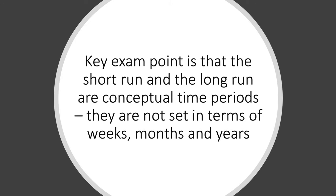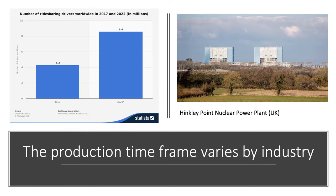The key exam point is that the short run and the long run are just conceptual, theoretical time periods. They're not set in terms of weeks, months and years — the short run and the long run will vary by industry because the production timeframe varies by sector. Essentially, the long run is the period of time needed for a supplier or producer to have flexibility over all of the relevant production decisions: how many people to employ, how much capital investment to make, and those big calls over the appropriate size and scale of a business.